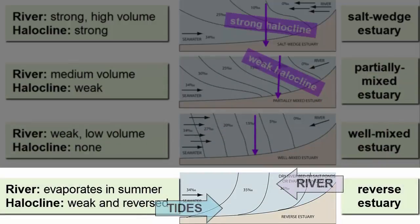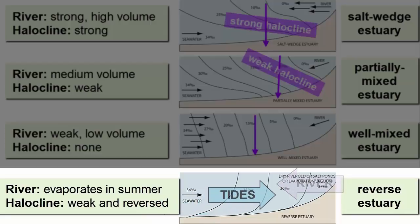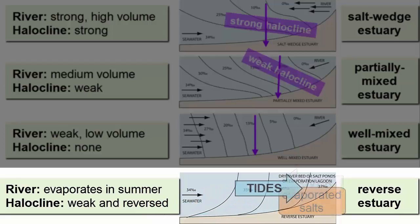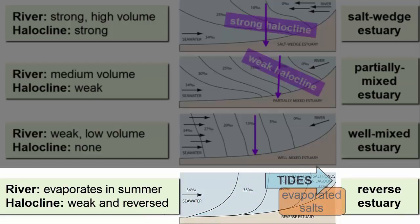What happens when the tides move into a river that dries up in the summer and leaves behind evaporated minerals? The waters pick up and dissolve the salts and get saltier as they move inland. These are called reverse estuaries.